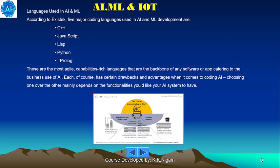According to existing research, there are five major coding languages used in AI and ML development: C++, JavaScript, Lisp, Python, and Prolog. These are the most agile, capability-rich languages that are the backbone of any software or app catering to business use of AI. Each of these languages has certain drawbacks and advantages when it comes to coding AI. Choosing one over the other mainly depends on the functionalities you would like your AI system to have.